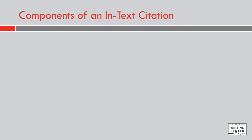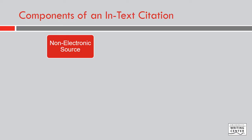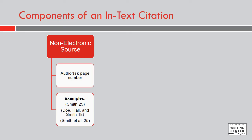When creating an in-text citation, it is important to consider the type of source you are using. If you are using a non-electronic source, like a book or a newspaper, your in-text citation will generally include an author or authors and a page number. Here are some examples. Note that if you have more than three authors, your citation will use only the last name of the first author listed and the phrase 'et al.'